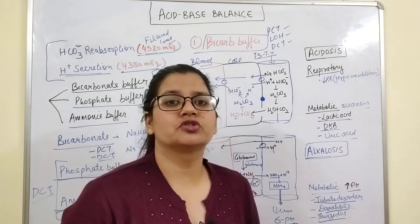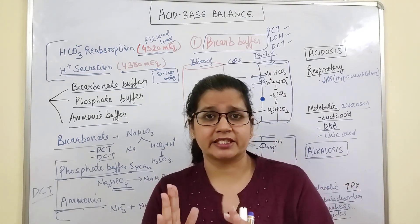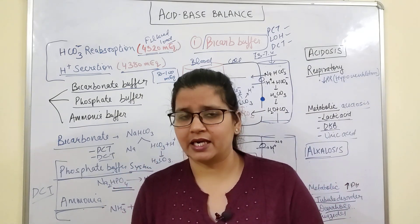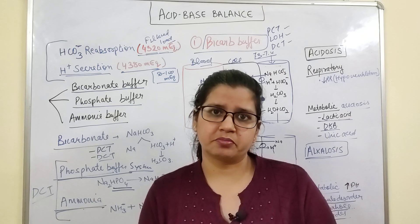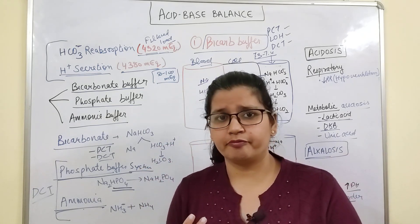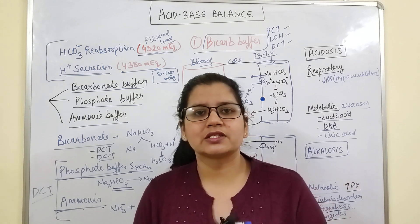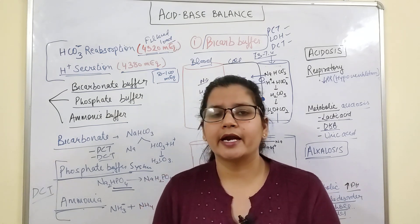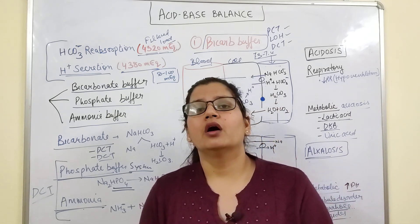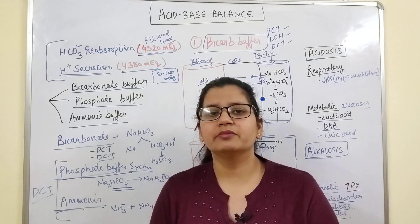Welcome everyone. Today we'll study about renal acid-base balance. When answering a question on acid-base balance, you need to cover three buffer systems in our body. First is the blood buffer system, which contains the bicarbonate buffer system, phosphate, and protein buffers — basically albumin and hemoglobin.